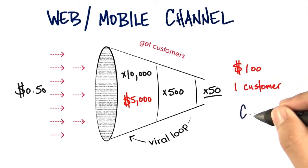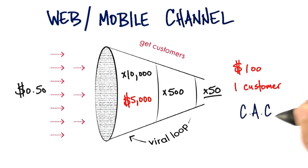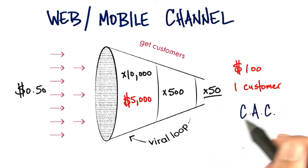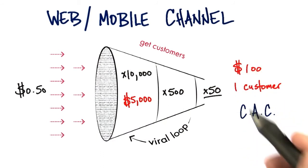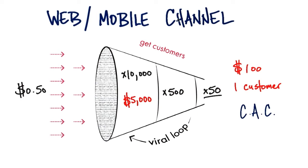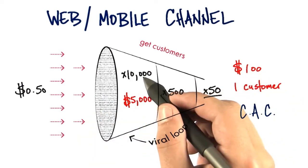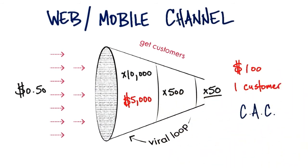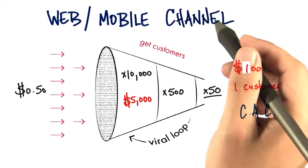That $100 equals my customer acquisition cost. I use this example for a web mobile channel, but it's similar for a physical channel — you might not be doing pay per click, you might be doing direct mail, or television or radio math. But the math works the same: how much did it cost to acquire a customer? How much did the campaign cost? How much did it cost to get them to consider your product, take a test drive, or fly your airline? What, in the end, was your customer acquisition cost?